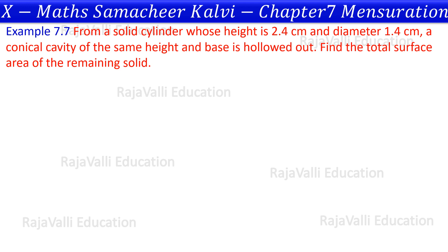First question: From a solid cylinder whose height is 2.4 cm and diameter 1.4 cm, a conical cavity of the same height and base is hollowed out. Find the total surface area of the remaining solid.